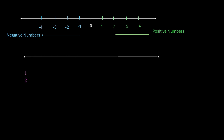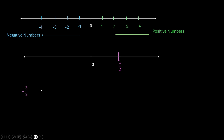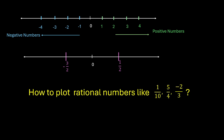Let us draw the number line and mark 0. Since 1 by 2 is positive, this is going to lie on the right side of the 0. And what if I want to plot minus 3 by 2? Since this is negative, this will lie on the left side of the 0. But we do not know the exact locations at which these numbers should lie on the number line. What if I want to plot rational numbers like 1 by 10, 5 by 4, minus 2 by 3? How do we do that? Let us look into it.